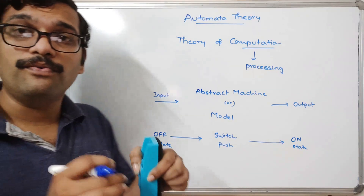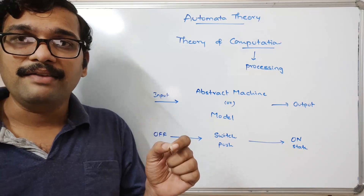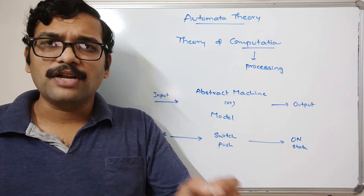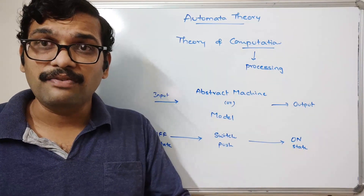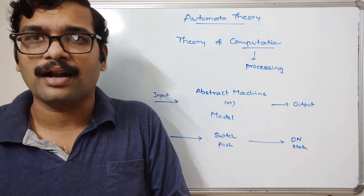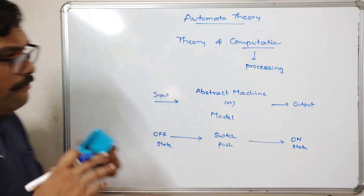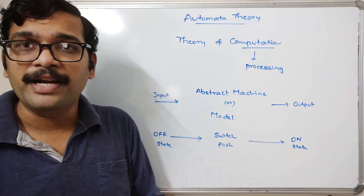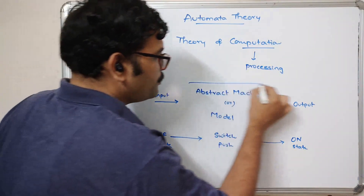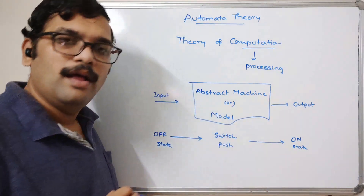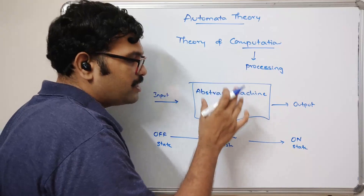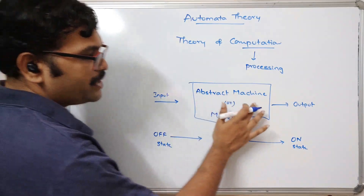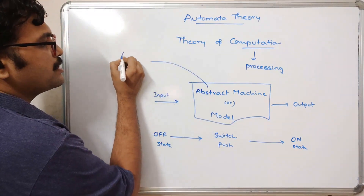For example, if you take a microwave, when you switch it on, by default it will be in the idle state. When you open the door, some sort of light will be activated — it changes its state from idle to ready to run. Whatever the device, it takes some input, produces some output, and the low-level implementation of all these processes we call an abstract machine or a model.